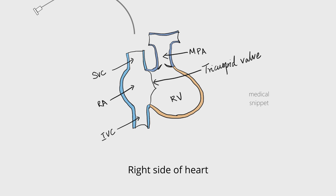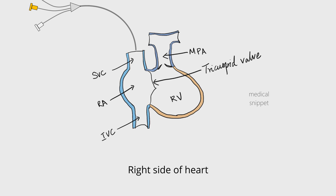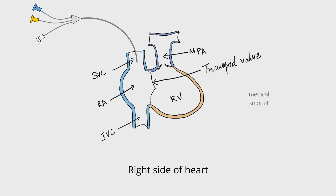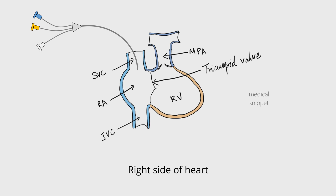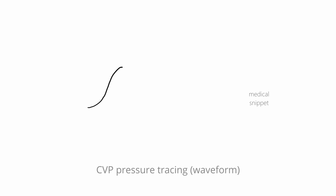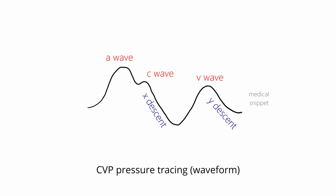It is measured by inserting a catheter via the internal jugular vein so that the tip of the catheter lies at the SVC and right atrial junction. The normal central venous pressure waveform has three peaks — namely A, C, and V waves — and two descents — namely X and Y descent.